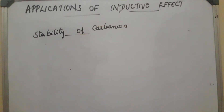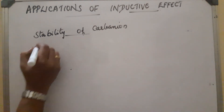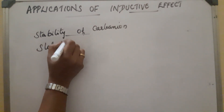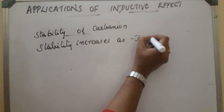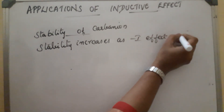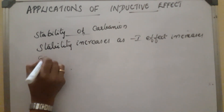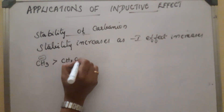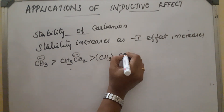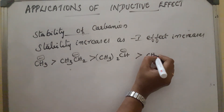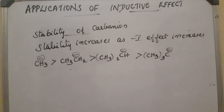Sixth application: stability of carbanions. A carbanion has a negative charge on the carbon. Here, the reverse order applies — stability increases as the minus-I effect increases. So the order is: primary carbanion > secondary > tertiary (CH3−). This concludes the applications of inductive effect.